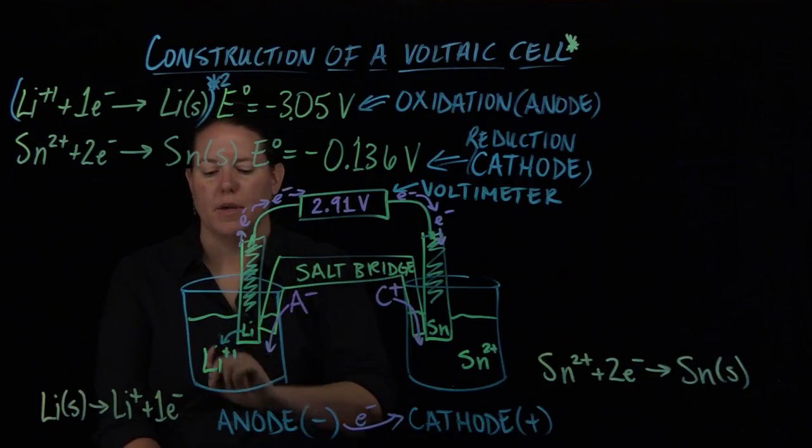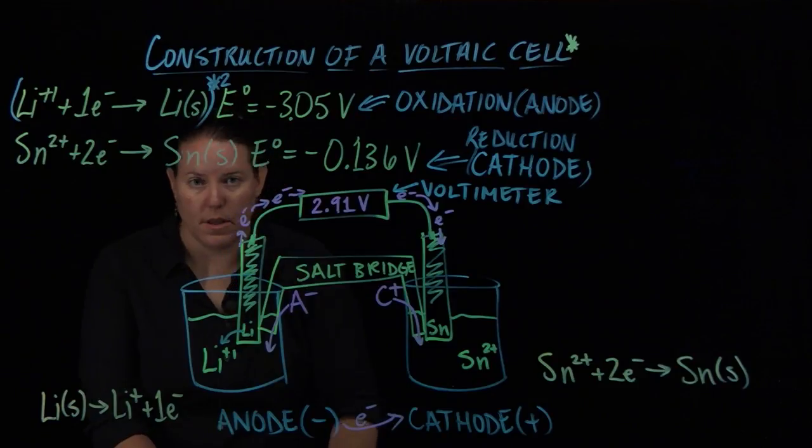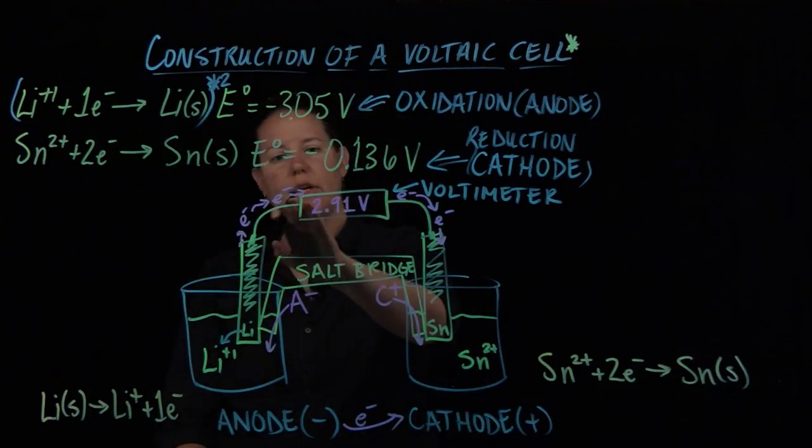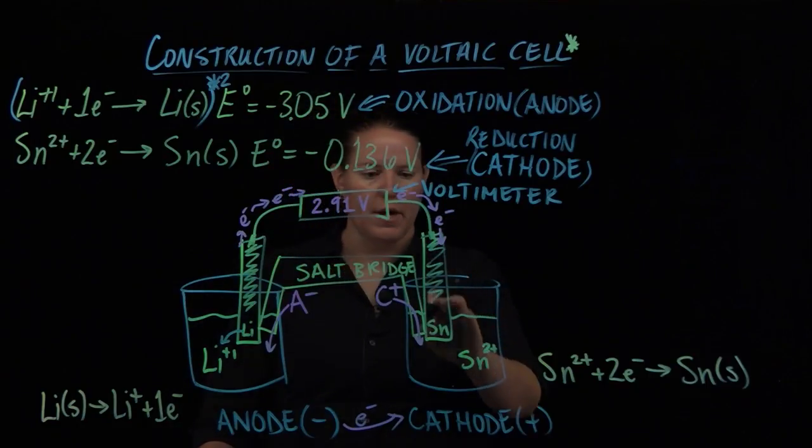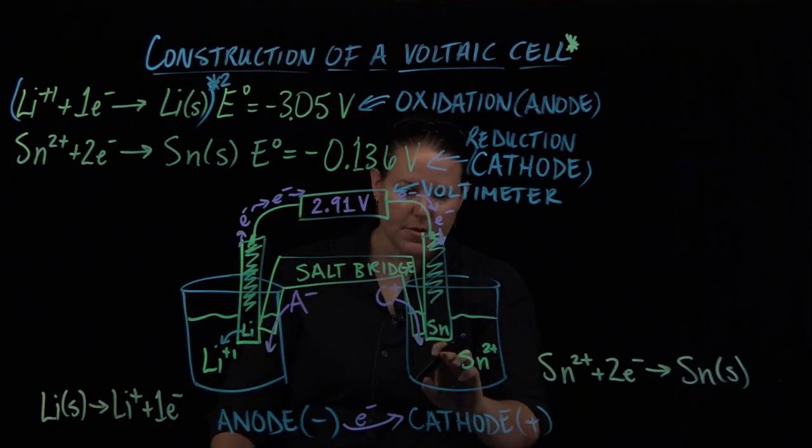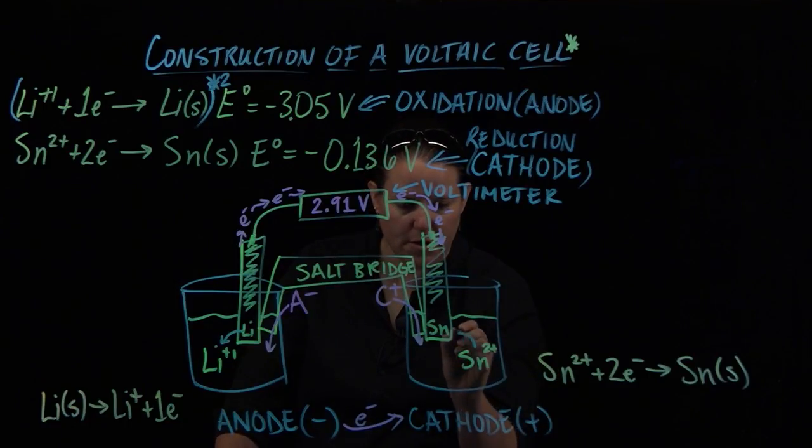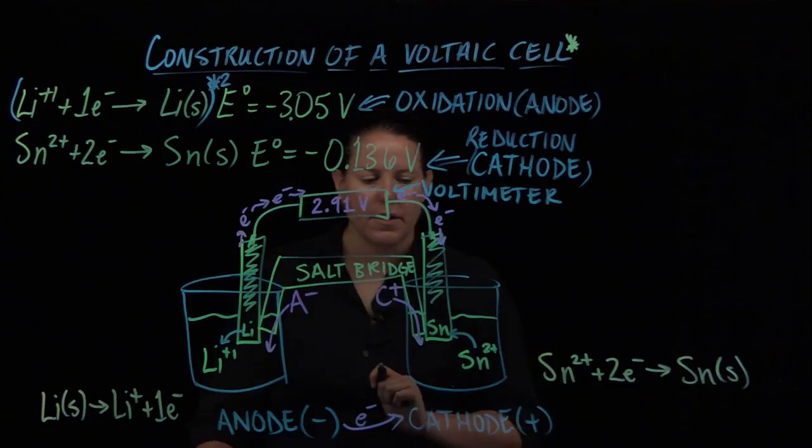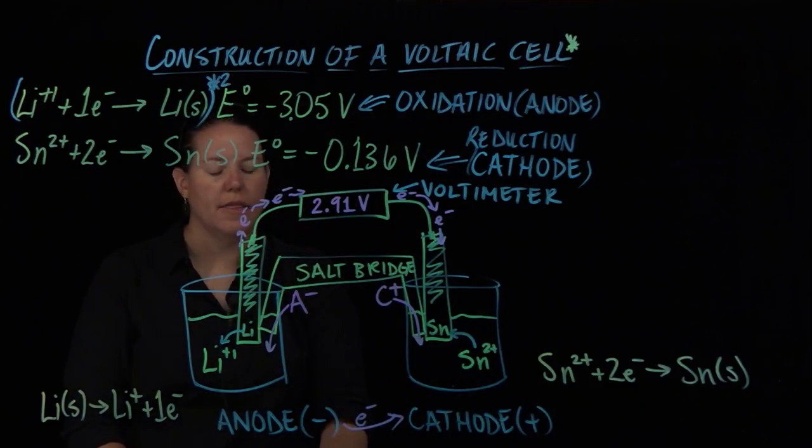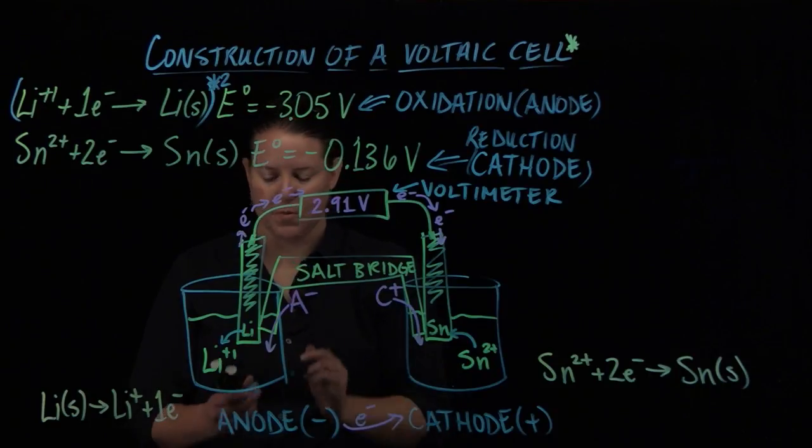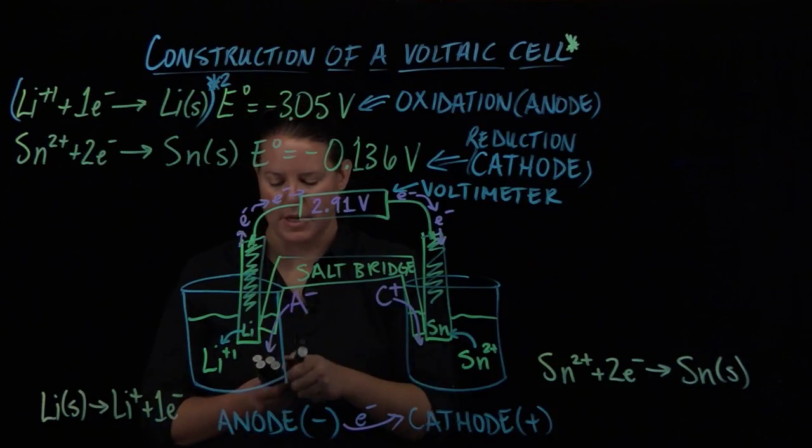Lithium solid gives up electrons, and when it gives up those electrons they go through the wire and it becomes lithium ion. The electrons transfer through the wire, through the voltmeter, through the wire, go down the electrode here and go into the solution. And just as this reaction shows, that half reaction shows they combine with the tin and then plate back onto the tin electrode.